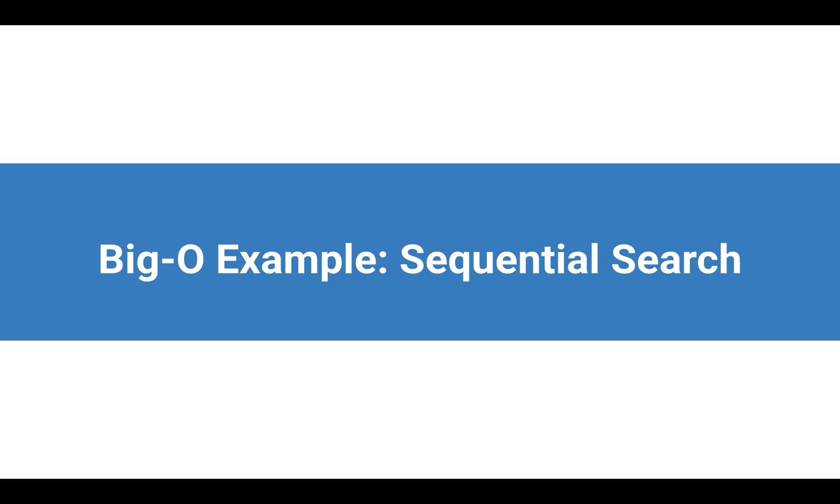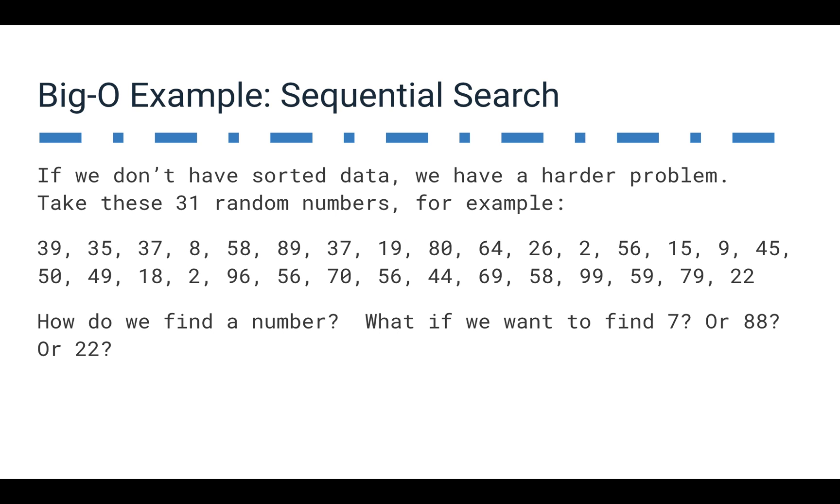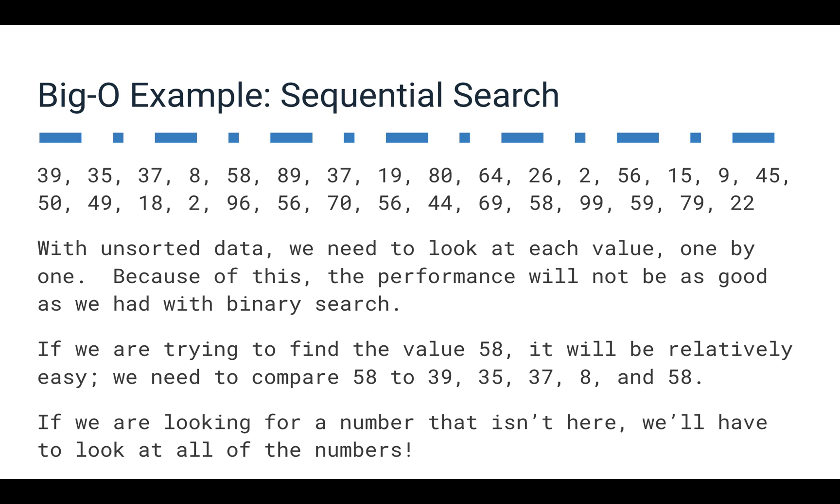So, if we take a look at a different kind of algorithm, a less effective algorithm, the sequential search, if we don't have sorted data, we don't really have a better way to solve this problem. If we have a bunch of unsorted data, and we need to find something in it, but we only need to do it once, then really all we can do is use this sequential search. So, if we have this big list of data here, how do we find a number? How do we find 7 or 88 or 22? Well, we could sort it first, which would take some time. But if we only have to do this once, it's actually going to be more effective to just find the thing.